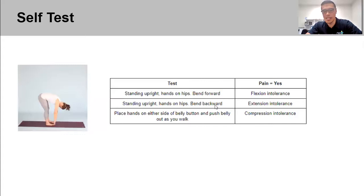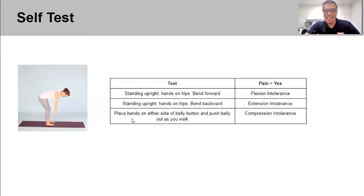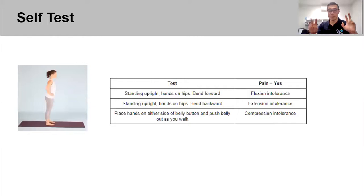The most challenging test is compression — the shearing forces side to side or up and down. To assess this, push your belly out as you walk, bracing as if someone's about to punch you in the stomach. Place your hands on the edges of your belly button, push your tummy out against your fingers, and start walking while bracing and breathing. If this reproduces your back pain, there are structures that don't like compression in your back.